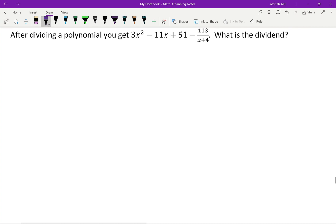They gave me my quotient - that's my answer after the division. They gave me my divisor - what I am dividing my polynomial by, which is x + 4.